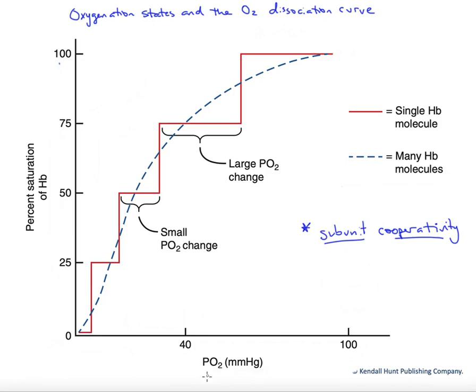We see down here on the bottom in our x-axis, we have a partial pressure of oxygen. Our lungs generally have a partial pressure of oxygen of about 100, maybe 105 millimeters of mercury. And then our tissues, at least at rest, are down here around 40.